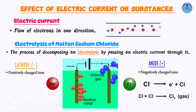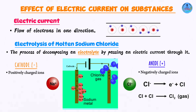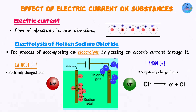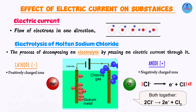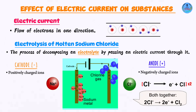What will happen is that one chlorine atom is going to combine with another chlorine atom to form the chlorine molecule. Essentially, if we were to combine these two half-equations, we end up with: two chloride ions are going to lose two electrons — one from each — to form the chlorine molecule, Cl₂.